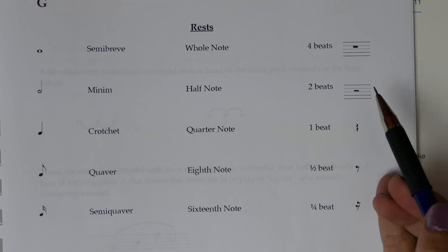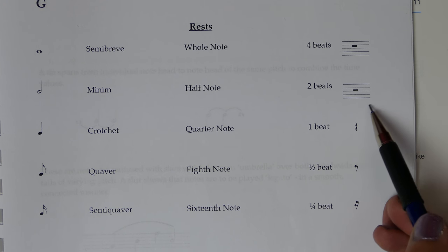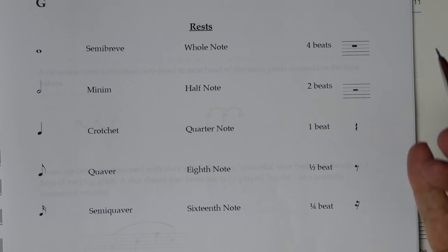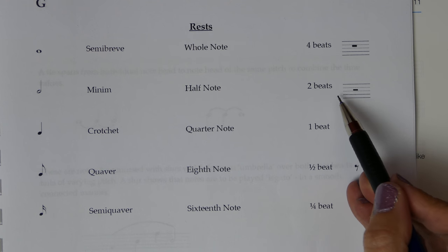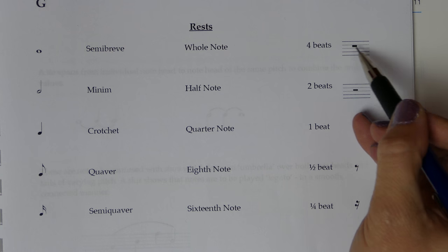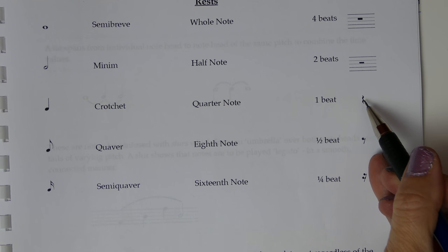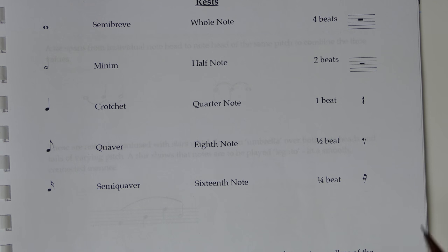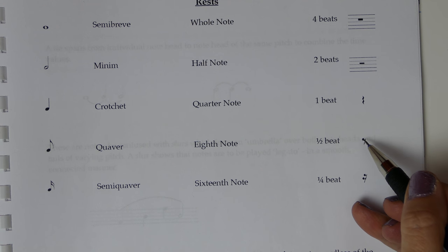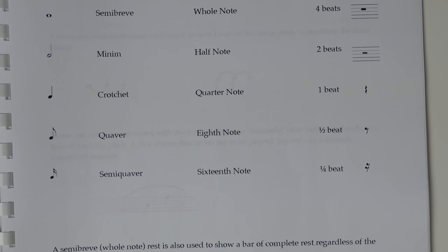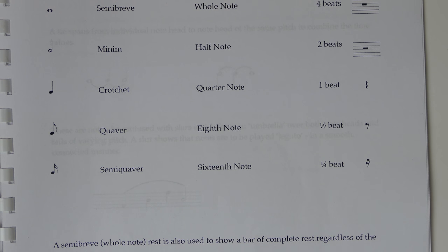Here we have our semi-breve or whole note rest, four beats, which is easily confused with the two beat note, this half note or minim beat. The way you can spot the difference is the four beat rest hangs off the fourth line. There's your little clue. Whereas the two beat rest just sits on the middle line. The crotchet rest is usually represented by this sort of vague wiggle. The quaver or eighth note rest looks a little bit like a number seven with a blob. And then the semi-quaver or sixteenth note rest adds another little line and blob into that.